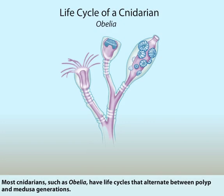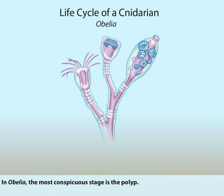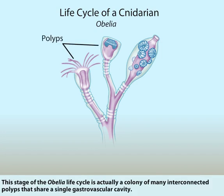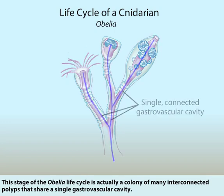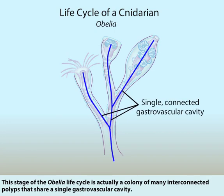Most Cnidarians, such as Obelia, have life cycles that alternate between polyp and Medusa generations. In Obelia, the most conspicuous stage is the polyp. This stage of the Obelia life cycle is actually a colony of many interconnected polyps that share a single gastrovascular cavity.